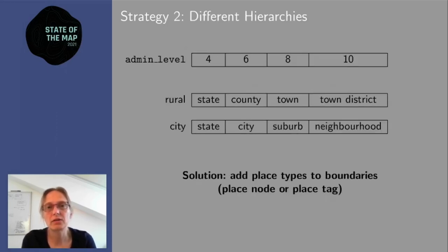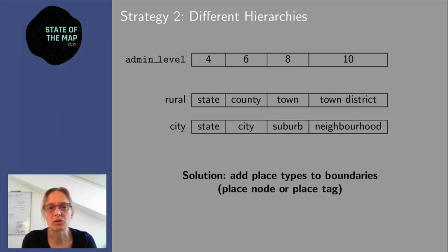The second strategy is to use completely different hierarchies. In rural areas a government might use states, counties, towns, while for cities they use states, cities, suburbs. This is easily mapped in OSM — you use the administrative structure your government uses and at admin level 6 you might have both counties and cities. You can then use the place tag to distinguish the two: either put a place tag on the boundary relation or use a place node.